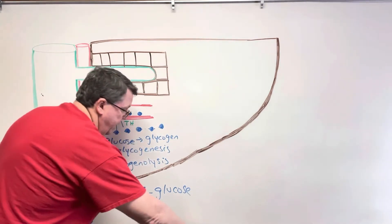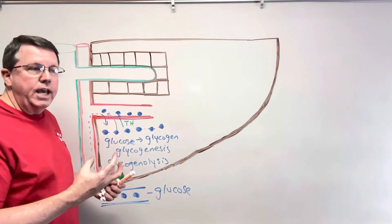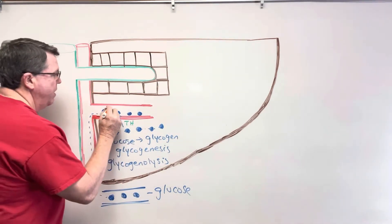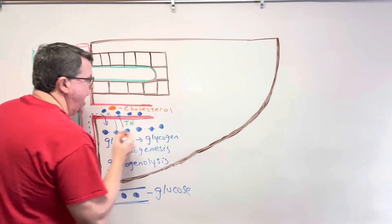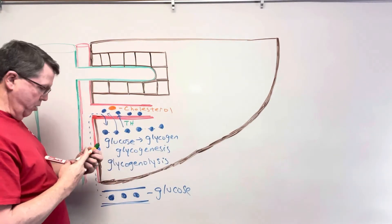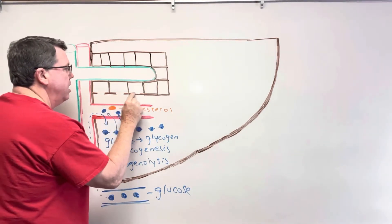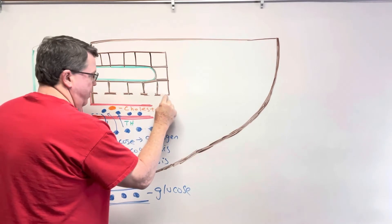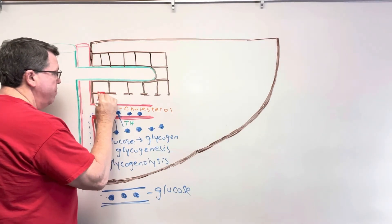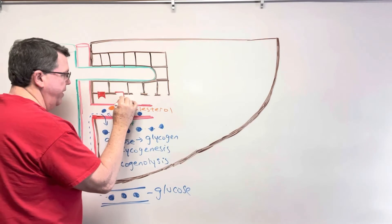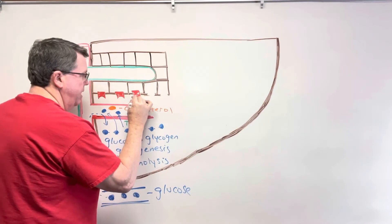Another thing thyroid hormone does involves cholesterol in the bloodstream — it takes cholesterol out. Here's my cholesterol molecule. What thyroid hormone does is it increases the number of receptors on liver cells, the hepatocytes. It increases the cholesterol receptors on there, and in actuality it adds many more than I'm drawing.